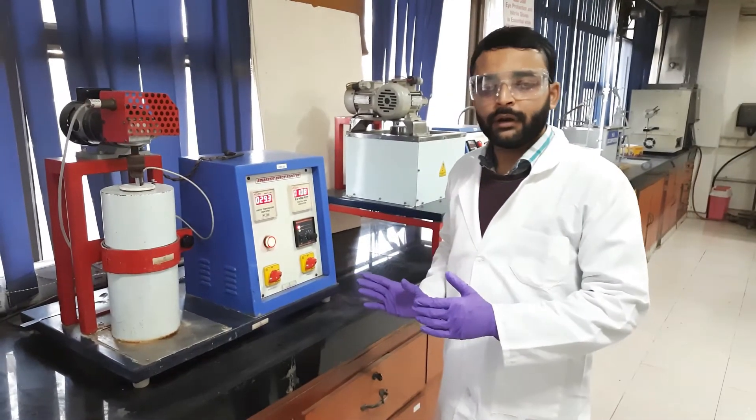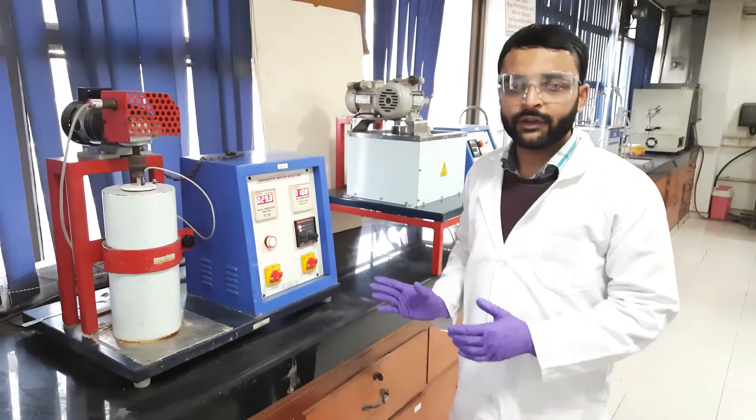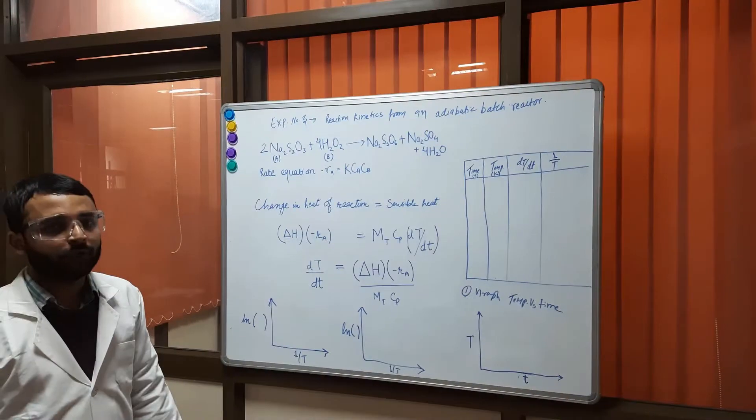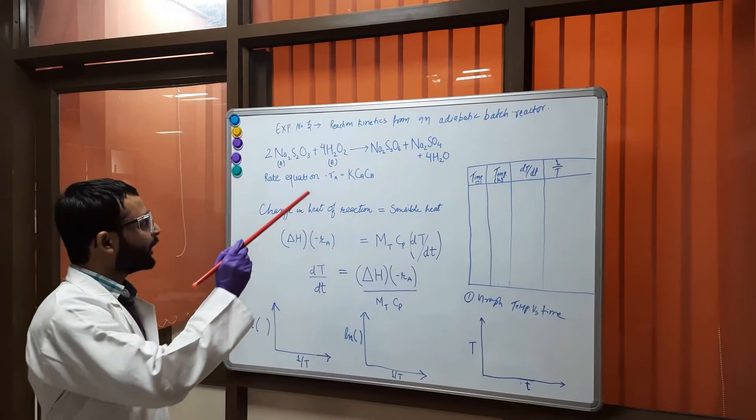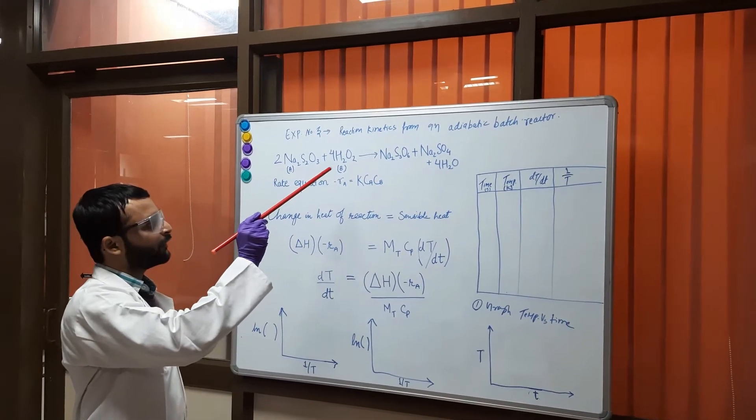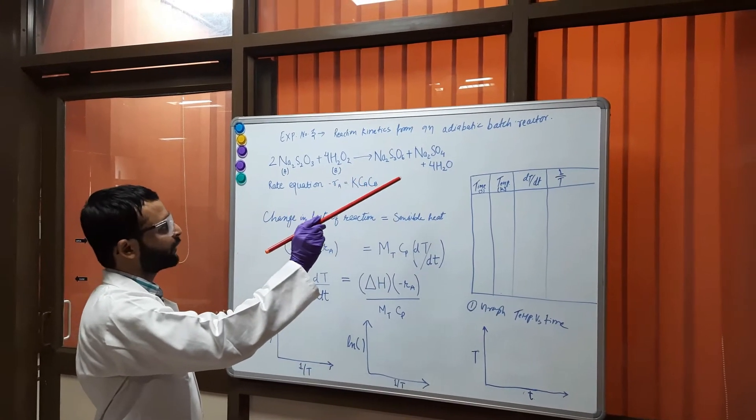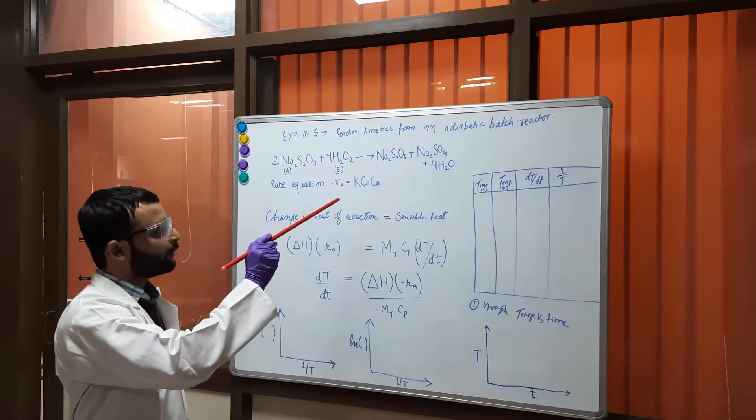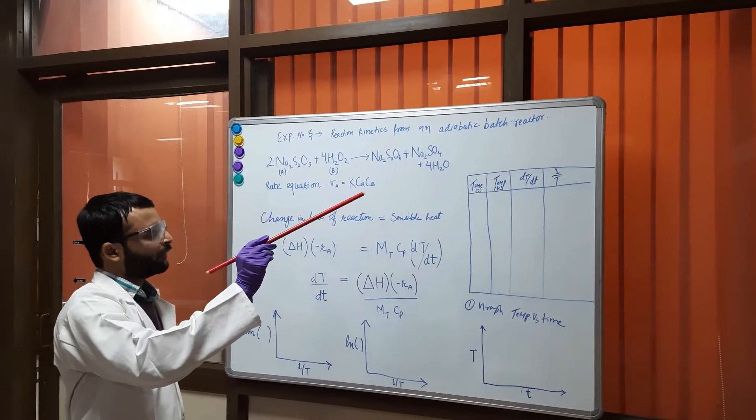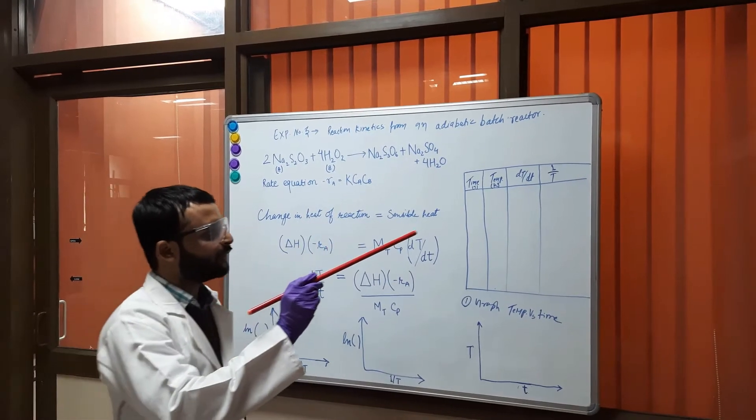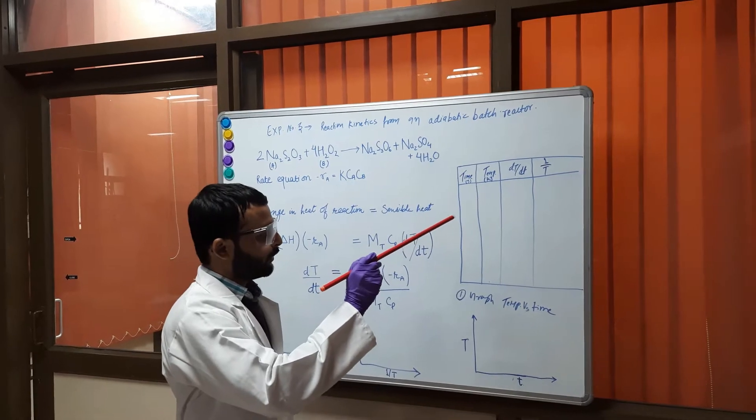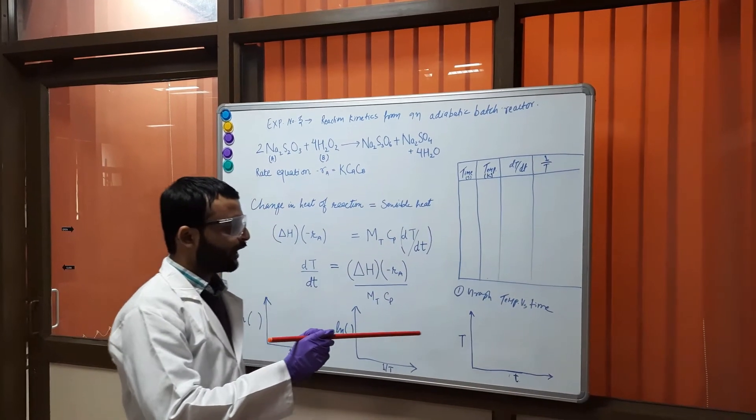Now I will explain the calculations part in which we will plot the temperature versus time. For our experiment the stoichiometric equation is given by sodium thiosulphate plus hydrogen peroxide goes to products and the rate equation is given by minus Ra equal to K Ca Cb. So in our experiment we have measured the temperature versus time data. We need to draw a table and plot the temperature versus time data.